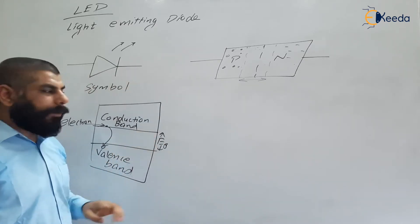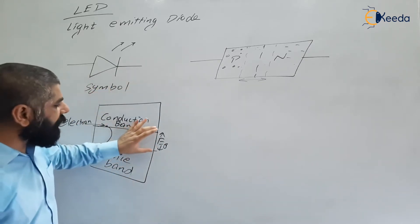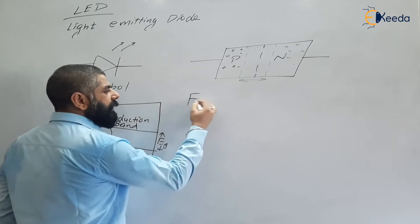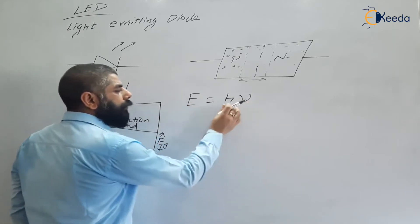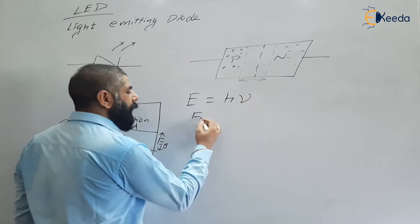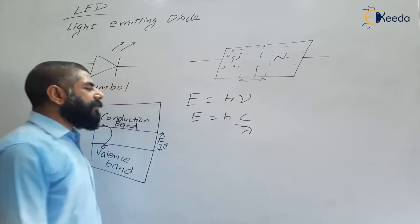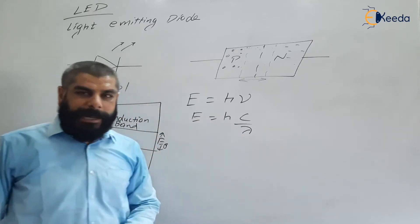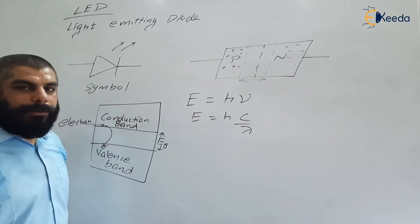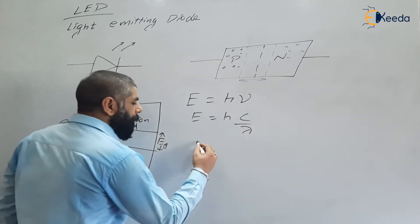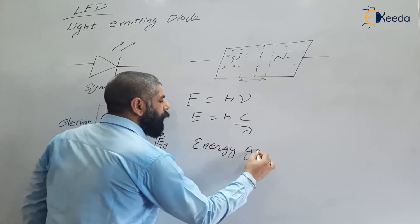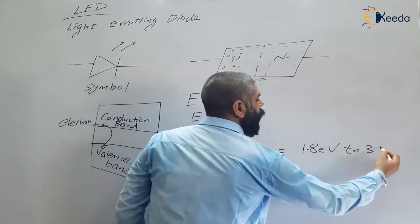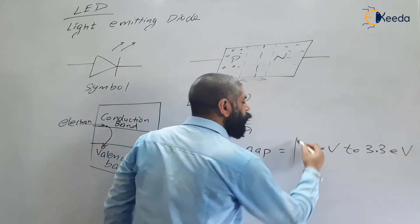In the case of an LED, this energy gap is very high. The energy released is given by E = hν, where h is Planck's constant and ν is the frequency, which equals C/λ, where λ is the wavelength of light. If we know the energy gap, we can calculate the wavelength. To emit visible light, the wavelength should be 400 to 700 nanometers.